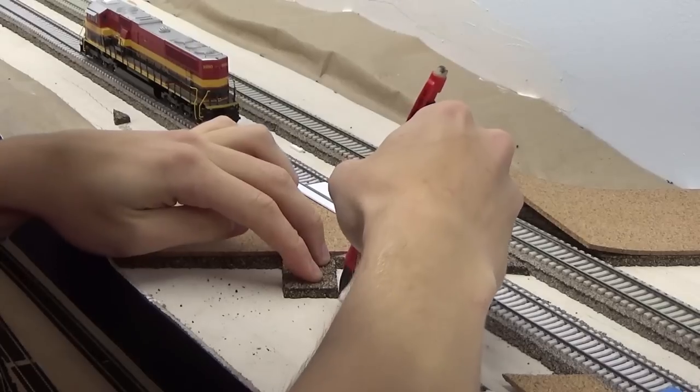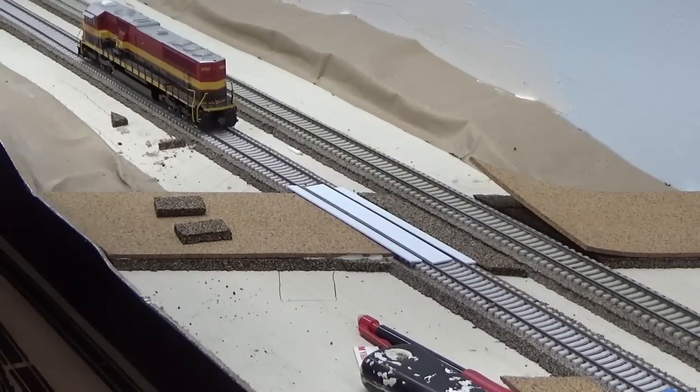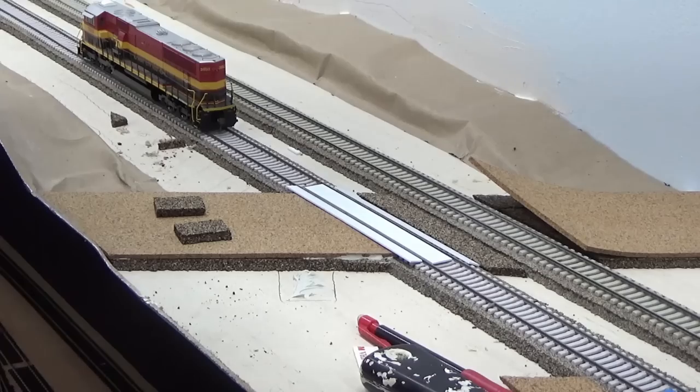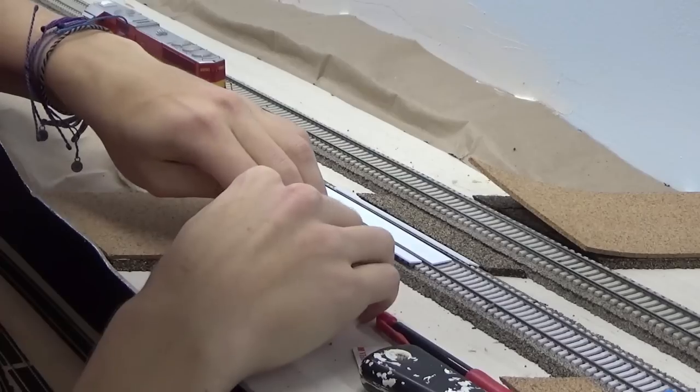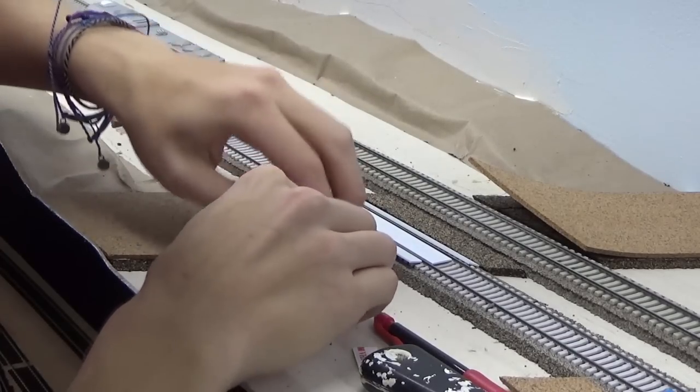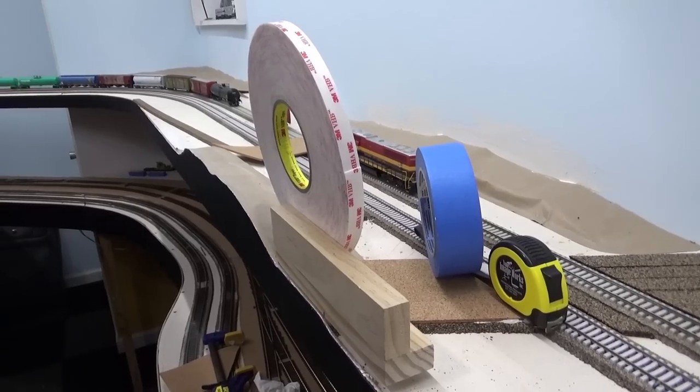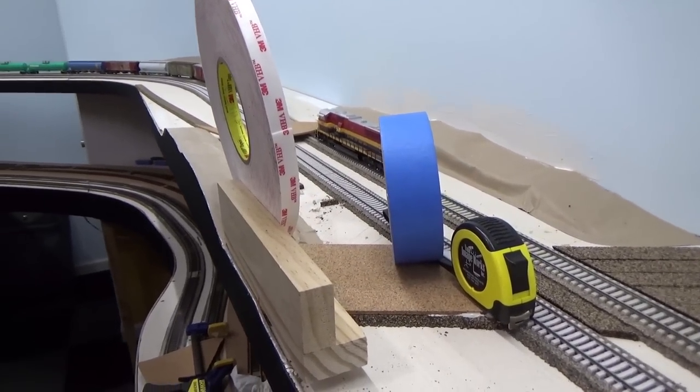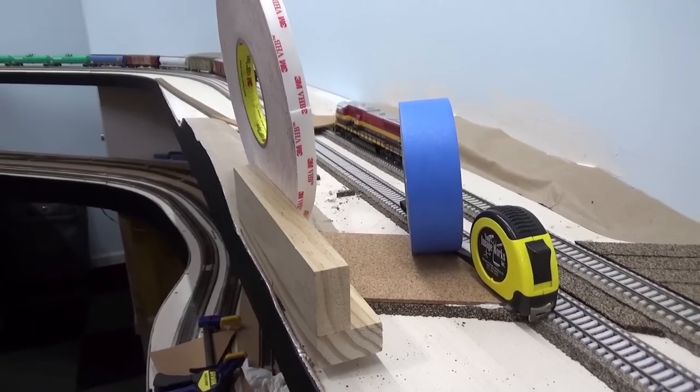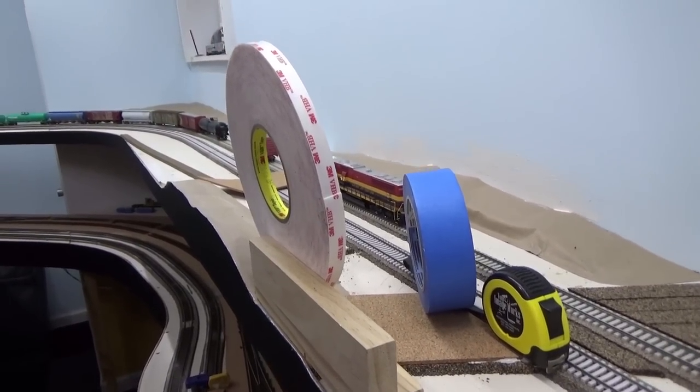One other thing I did was add a little section for what will eventually be the actual grade crossing gates and lights, so I had to build up the ground around it just a bit. I cut another section of cork and glued that off to the side. As everything dried, I weighted it down with some random objects which eventually all fell off the layout, but no harm, no foul. I just wanted to make sure the cork dried as flat as possible.